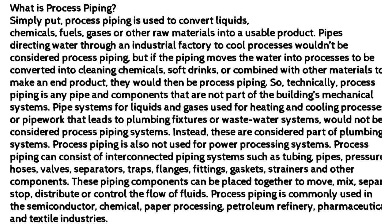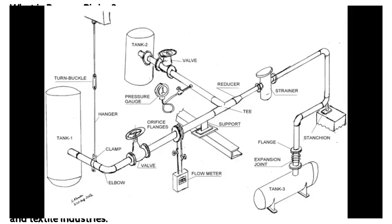Process piping can consist of interconnected piping systems such as tubing, pipes, pressure hoses, valves, separators, traps, flanges, fittings, gaskets, strainers and other components.